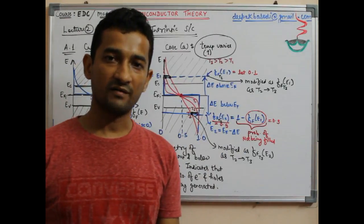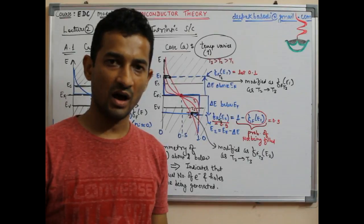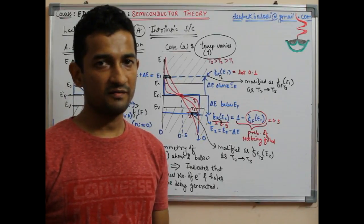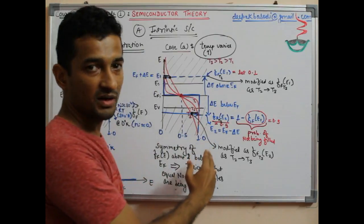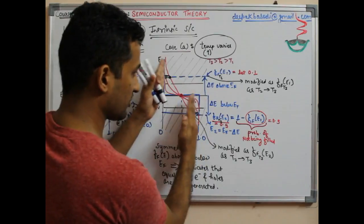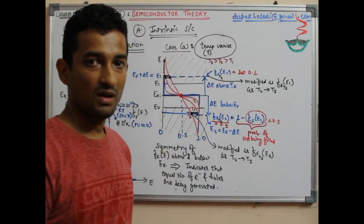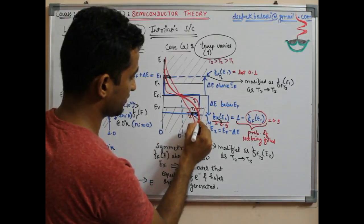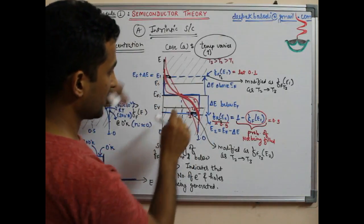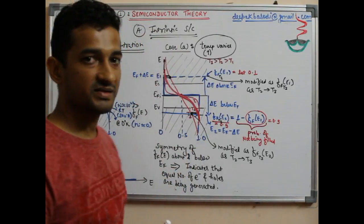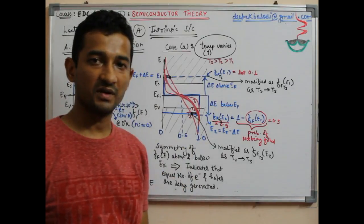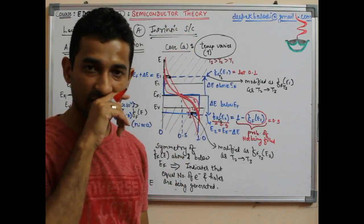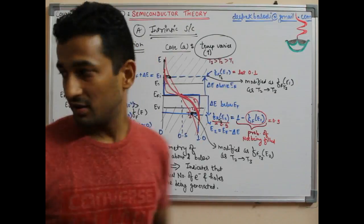The Fermi level is maintained at half the band gap because temperature variation is an unbiased effect — it always generates equal numbers of free electrons and free holes. In intrinsic semiconductor there is no mechanism to increase only electrons or only holes. Temperature variation always increments both by equal amounts, so symmetry is always maintained and the Fermi level stays fixed.